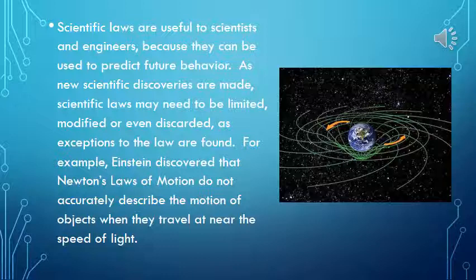Scientific laws are useful to scientists and engineers because they can be used to predict future behavior. As new scientific discoveries are made, scientific laws may need to be limited, modified, or even discarded as exceptions to the law are found. For example, Einstein discovered that Newton's laws of motion do not accurately describe the motion of objects when they travel at near the speed of light.